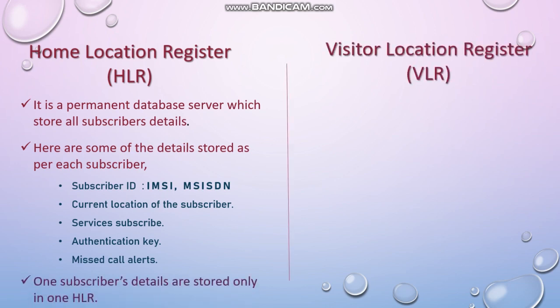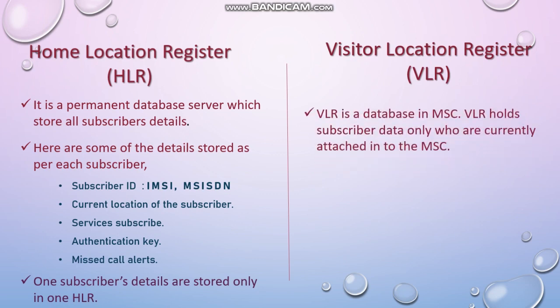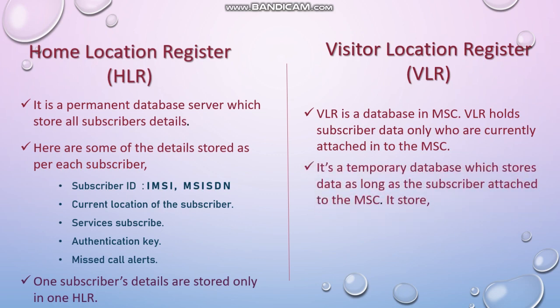Visitor Location Register is a database located in the MSC, which is well known as the Mobile Switching Center. There will be many MSCs in the network, so each MSC will have one or multiple VLRs. Only the currently attached subscriber details are stored in the VLR — it holds subscriber details as temporary. When you go to another area, your attached MSC may change, so the records from the previous VLR will be erased and the new VLR will be updated.